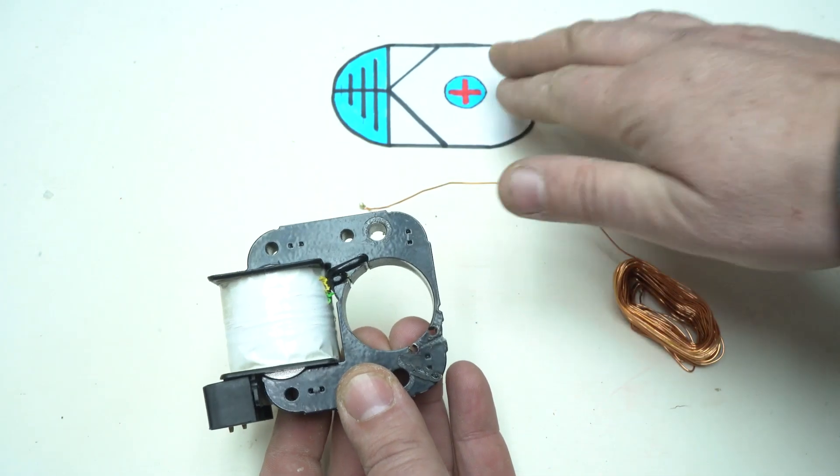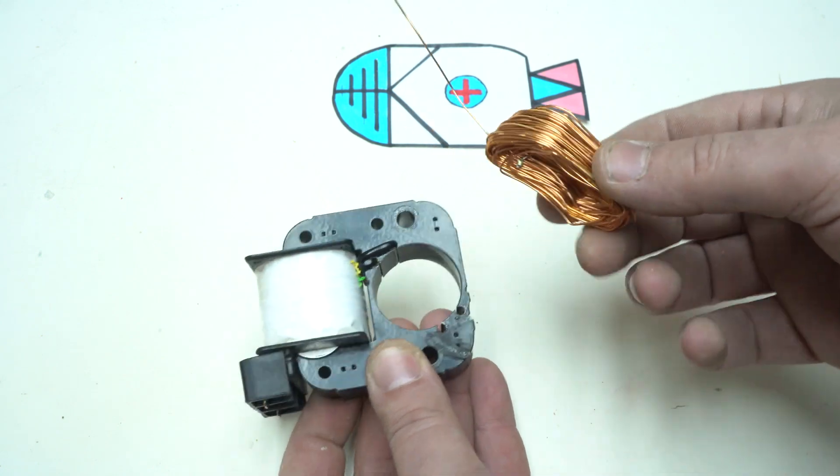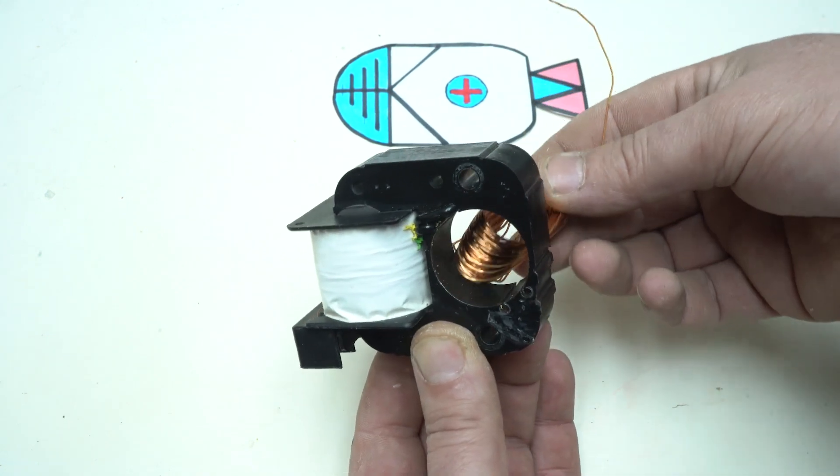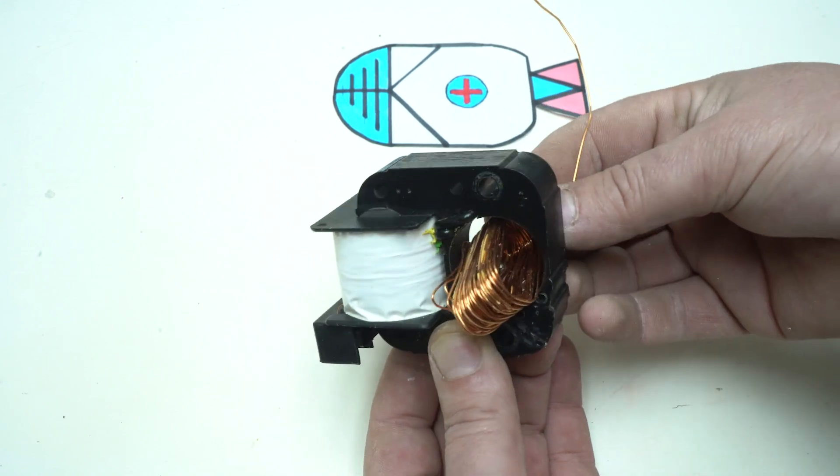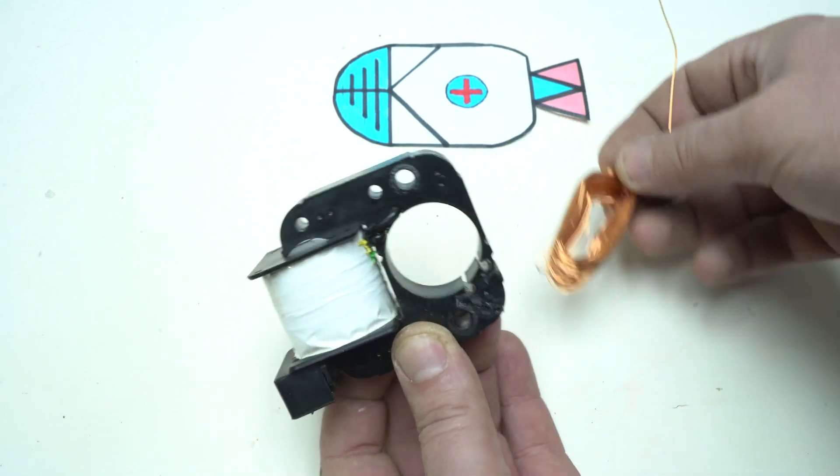I'm using around 10 meters of 1.3 millimeter diameter copper wire and this takes me around two hours to wind all the wire. It's hard but not impossible.